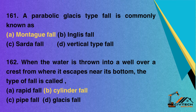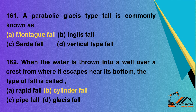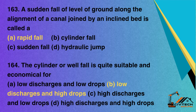Question 161: A parabolic glacis type fall is commonly known as — A. Montague fall; B. Inglis fall; C. Sarda fall; D. Vertical type fall. Correct option: A. Montague fall. Question 162: When the water is thrown into a well over a crest from where it escapes near its bottom, the type of fall is called — A. Rapid fall; B. Cylinder fall; C. Pipe fall; D. Glacis fall. Correct option: B. Cylinder fall. Question 163: A sudden fall of level of ground along the alignment of a canal joined by an inclined bed is called — A. Rapid fall; B. Cylinder fall; C. Sudden fall; D. Hydraulic jump. Correct option: A. Rapid fall.